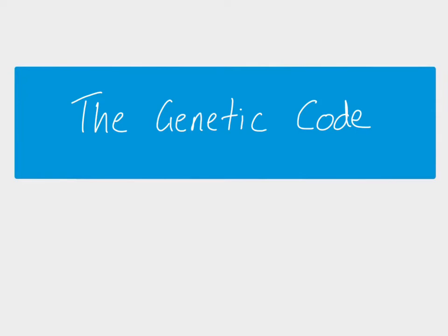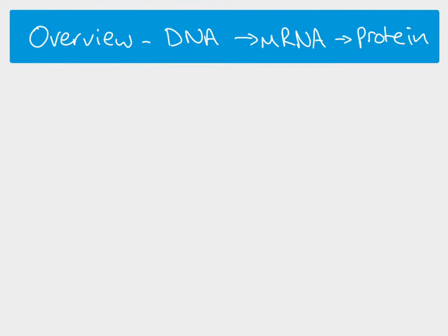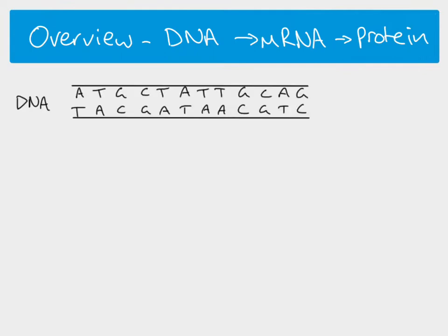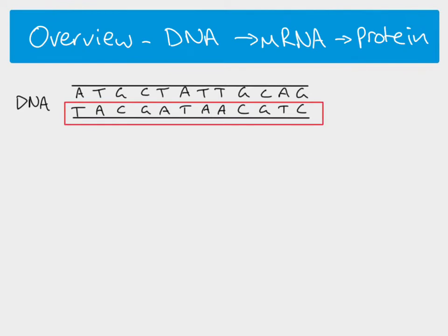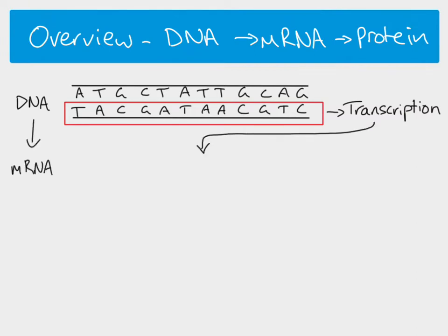In this video we are looking at the genetic code — how it works and how to interpret it. Starting with an overview of how we go from DNA to messenger RNA and then to proteins. This section of DNA corresponds to a gene, just a small section of a chromosome. In reality a gene would be hundreds or even thousands of base pairs long. The first thing that happens is that the DNA is transcribed — one strand acts as a template.